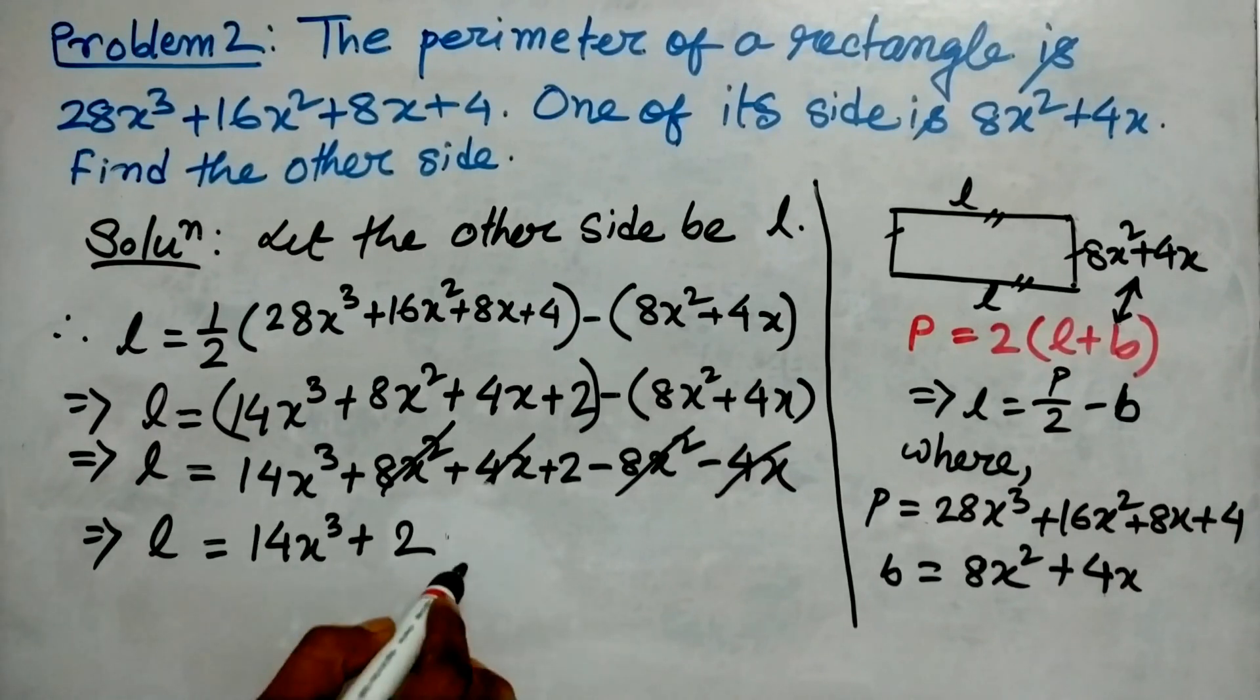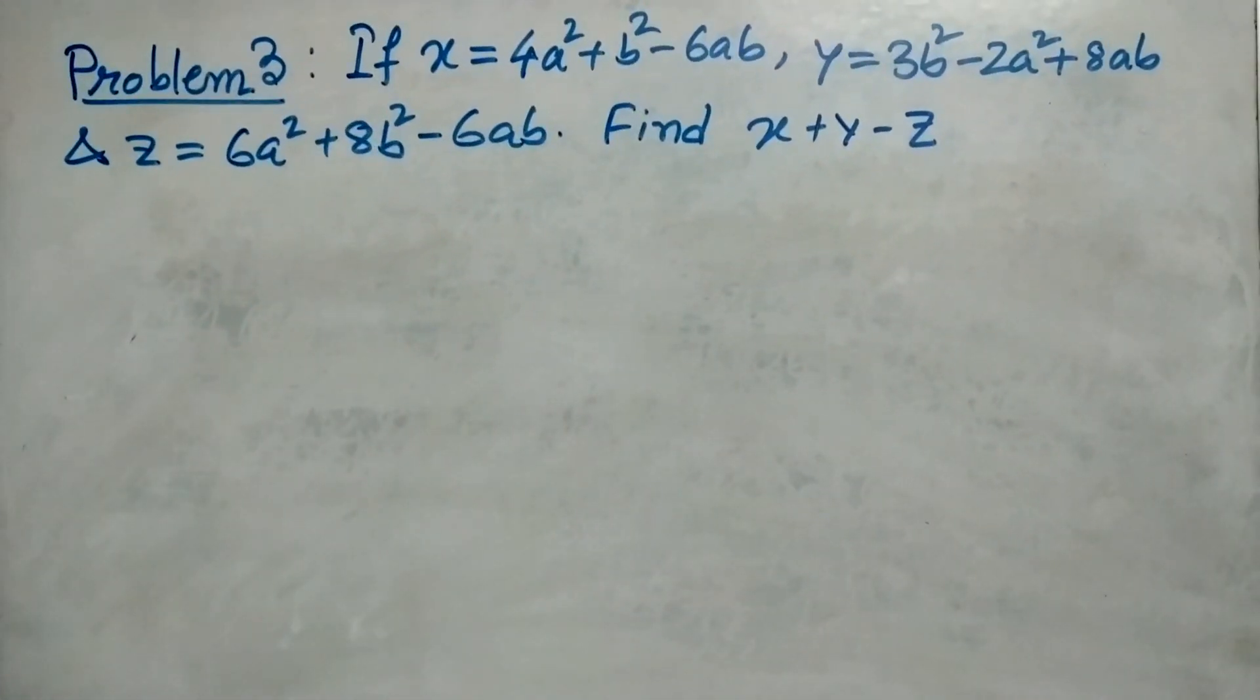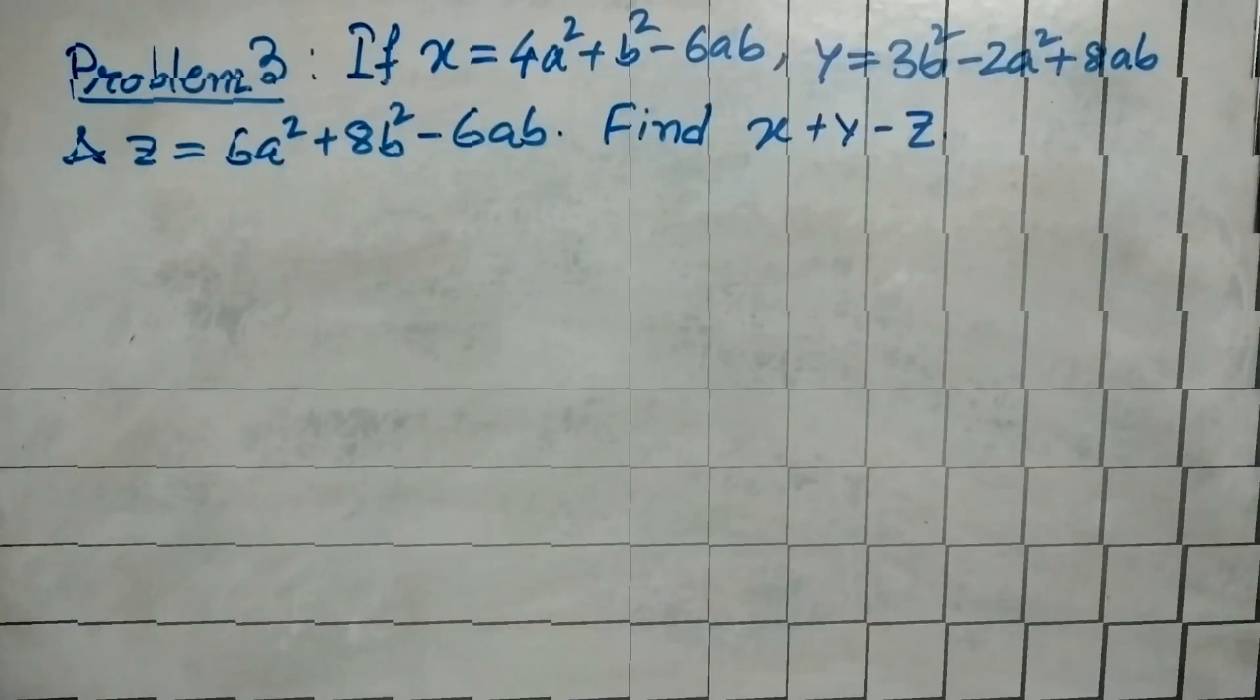Problem number three: If x = 4a²+b²-6ab, y = 3b²-2a²+8ab, and z = 6a²+8b²-6ab, then find x+y-z.